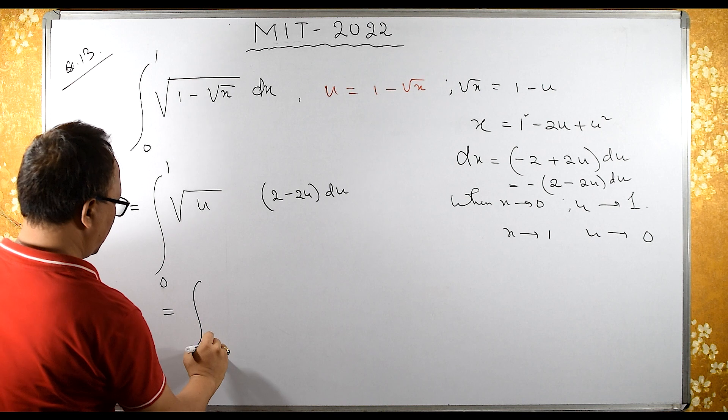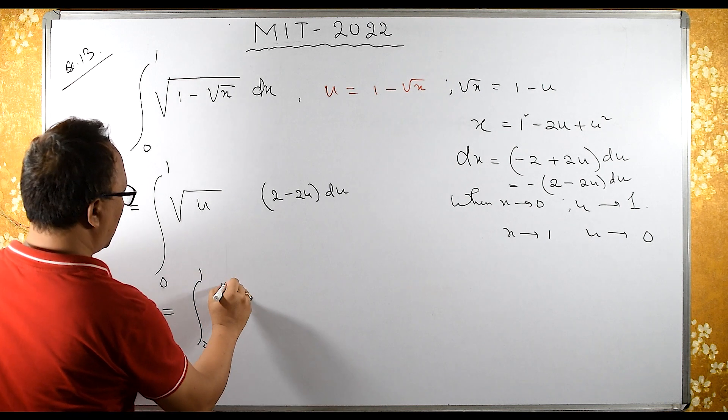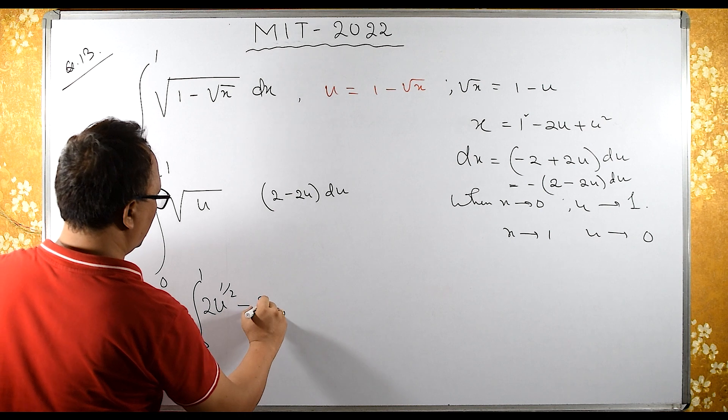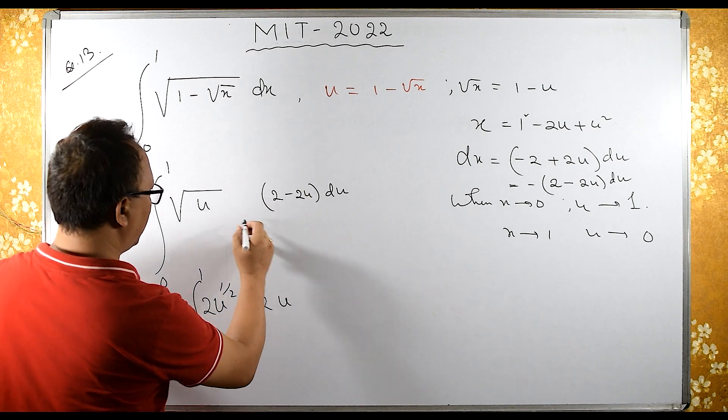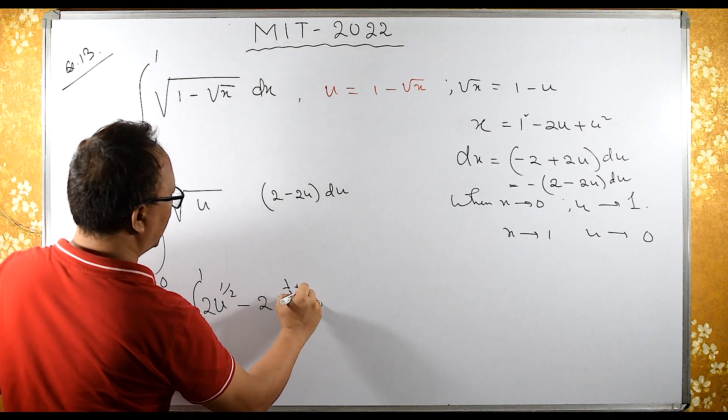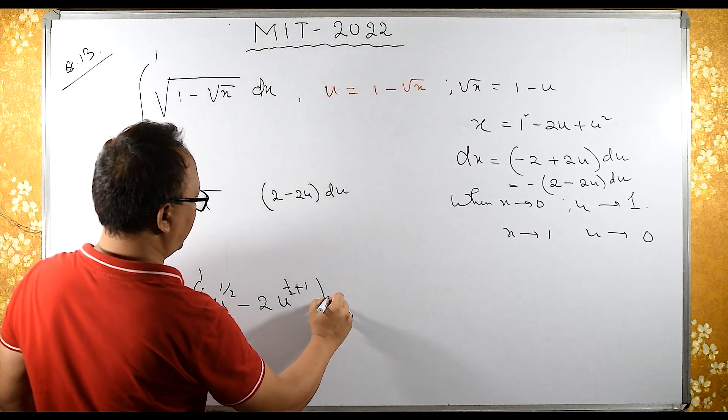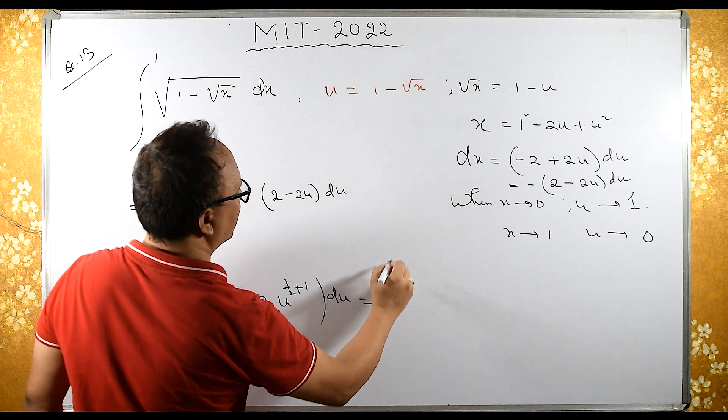The integral from 0 to 1 of u^(1/2) times (2 - 2u) du equals the integral from 0 to 1 of 2u^(1/2) - 2u^(3/2) du.